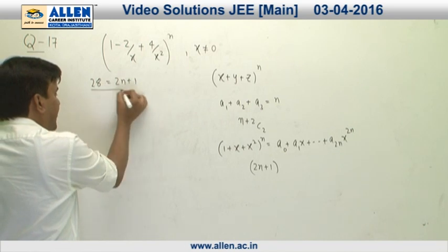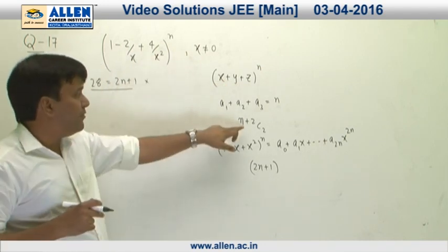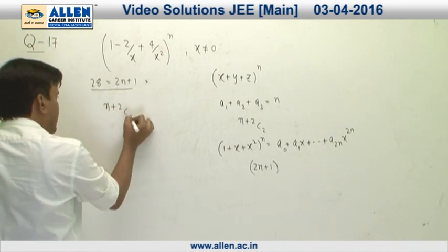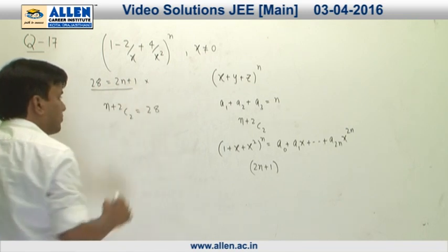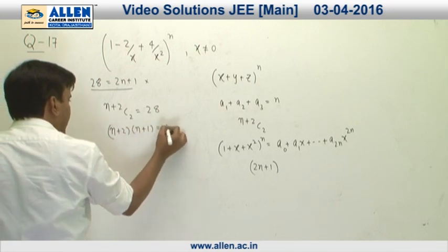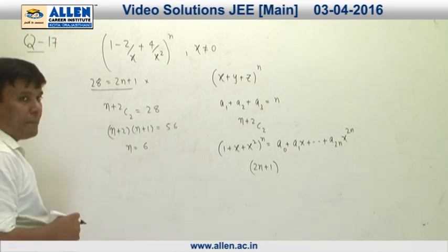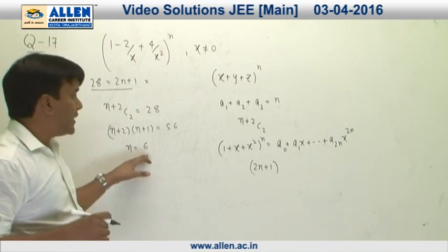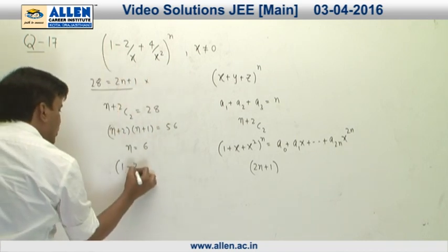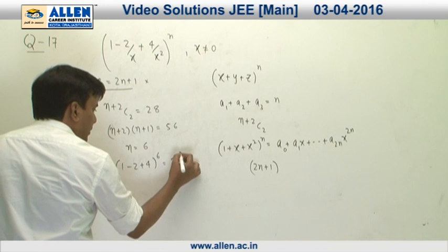But if we take these 3 as 3 different terms and calculate the total number of terms as N plus 2C2, then N plus 2C2 equals 28. This is N plus 2 into N plus 1 equals 56, and from here N equals 6. If we are talking about the sum of the coefficients of all terms in this expansion, we must put X equal to 1. This is 1 minus 2 plus 4 raised to the power 6, which is 3 to the power 6, that is 729.